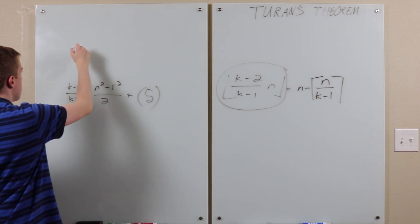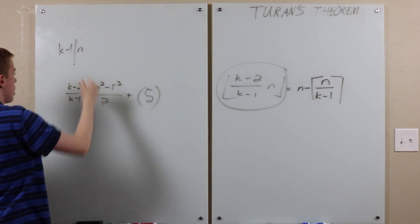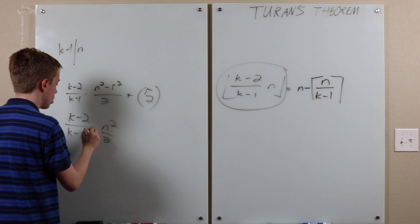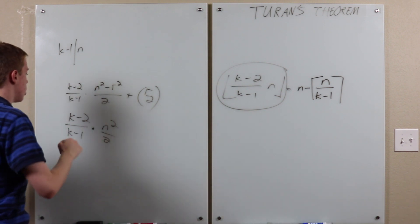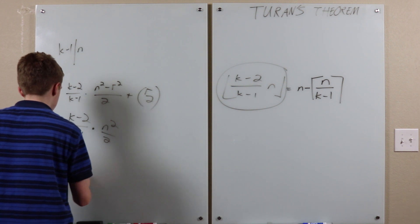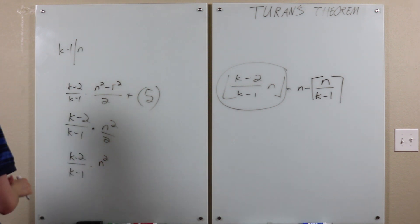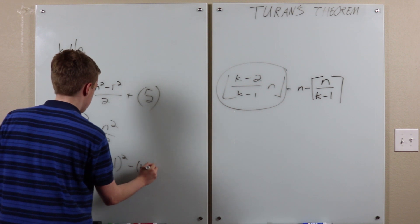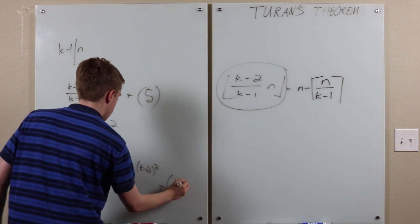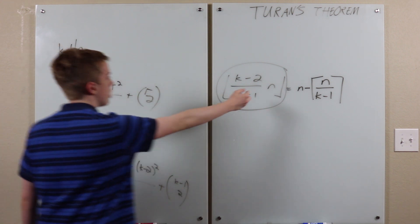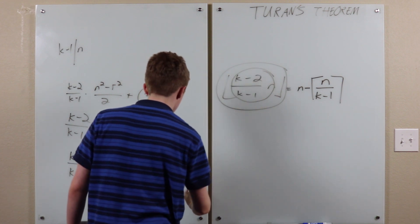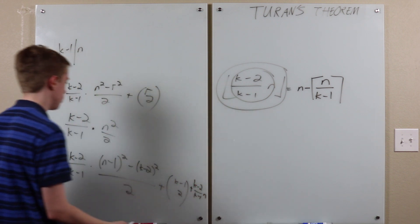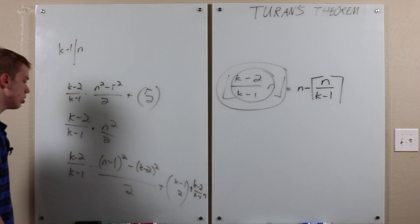if K minus one divides N, then we're trying to prove this bound. Because zero choose two equals zero. And then we know that the graph we get when we take that out has, at most, this many edges by the inductive hypothesis. And then we're adding on this, which, in this case, turns out to be an integer. So, we know that the full graph has, at most, this many edges. And it can be checked that those are equal.